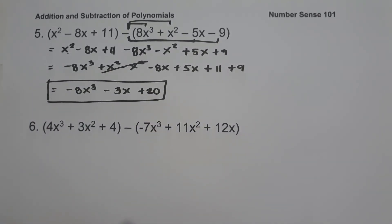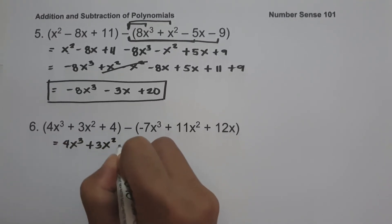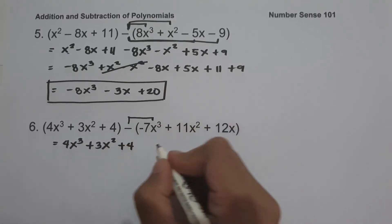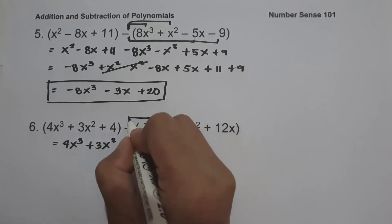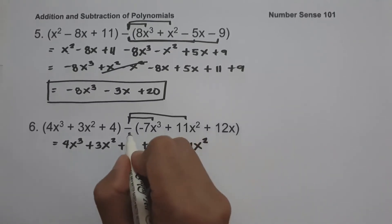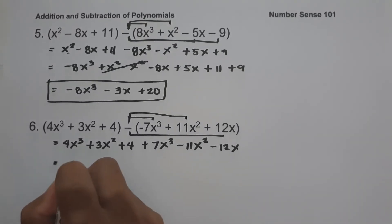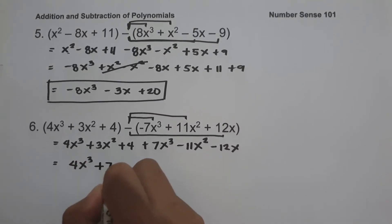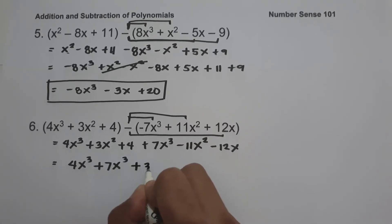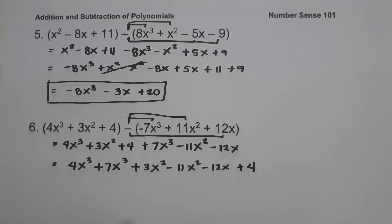On number 6, we have the quantity 4x cubed plus 3x squared plus 4, minus the quantity negative 7x cubed plus 11x squared plus 12x. So let us distribute the negative sign: negative times negative 7x cubed is positive 7x cubed, negative times positive 11x squared is negative 11x squared, and negative times positive 12x is negative 12x. So let us have 4x cubed plus 7x cubed, plus 3x squared minus 11x squared, minus 12x.